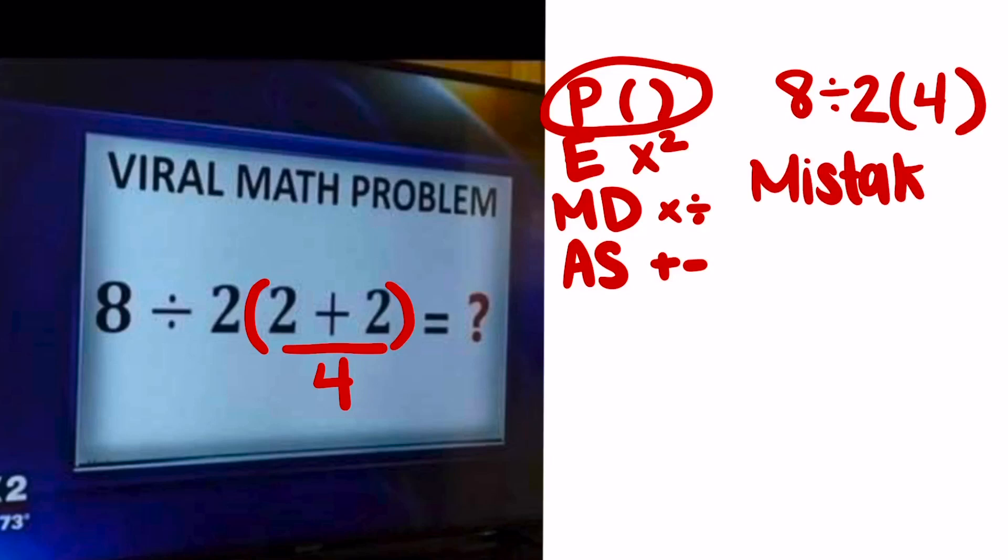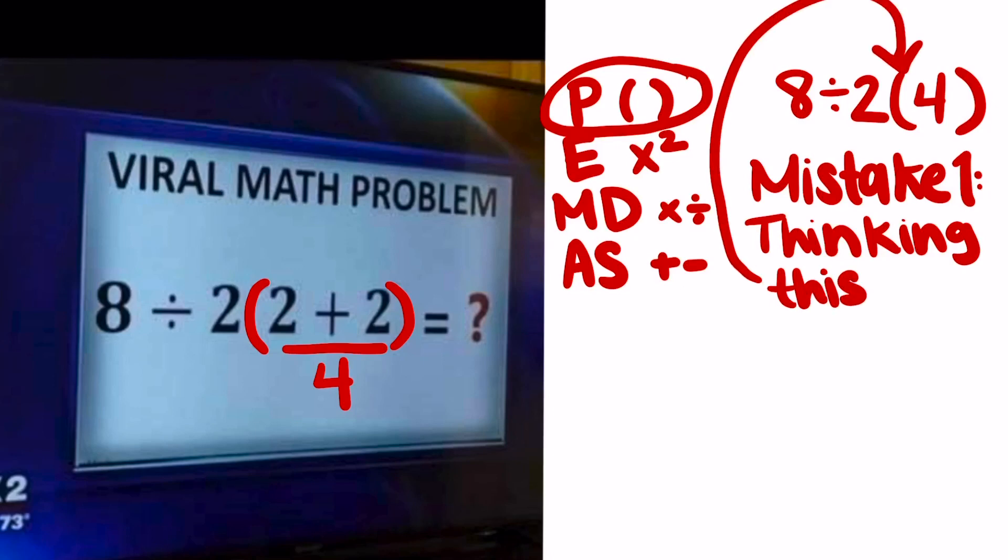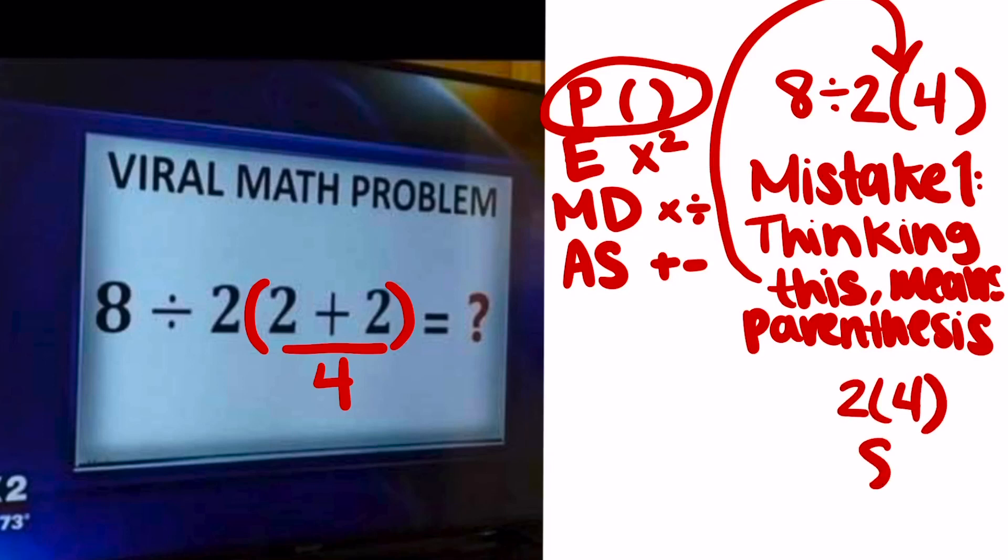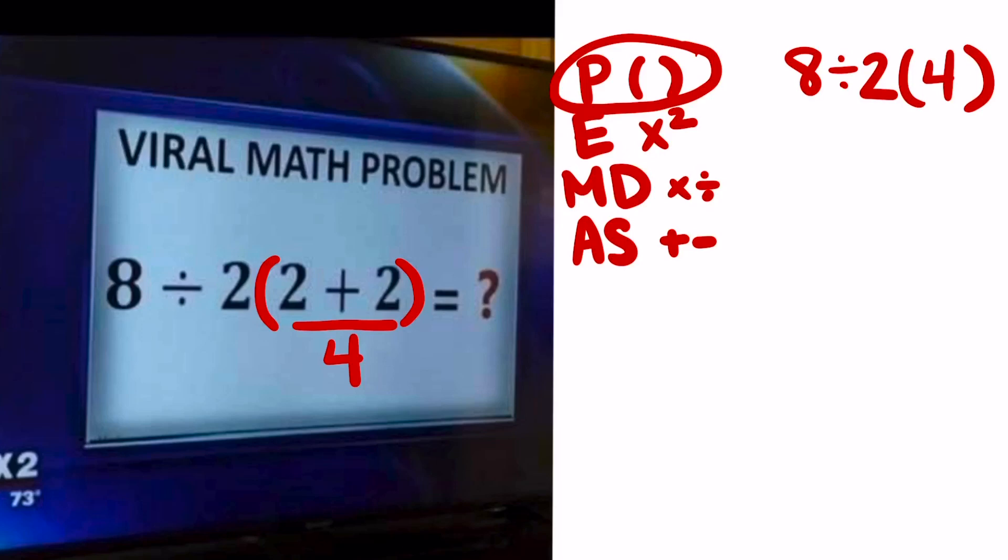The first mistake I saw a lot of people doing in the comment section was then saying well the 4 is in parentheses so we have to take care of that and distribute the 2 onto it. But that's not quite the case because it's not really parentheses if we're distributing, that's multiplying. You can see here if you were to work that out you would get that incorrect answer of 1 a lot of people were getting.